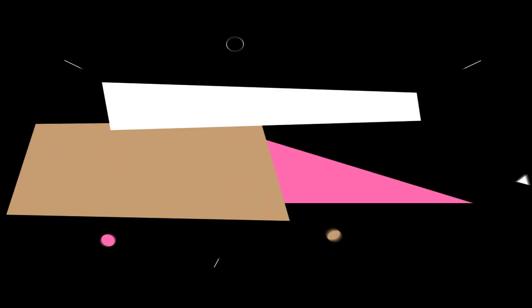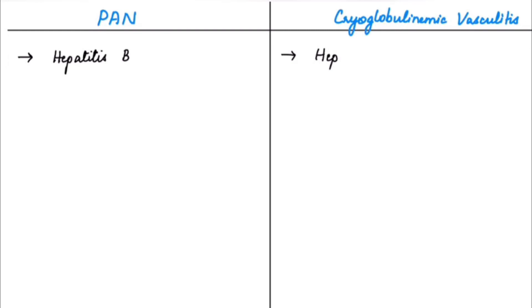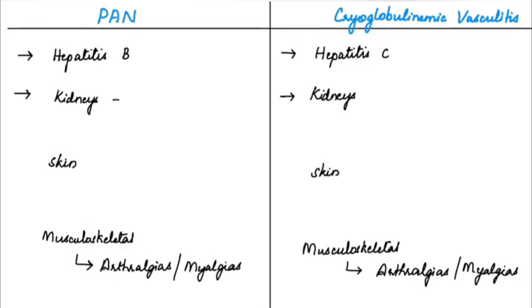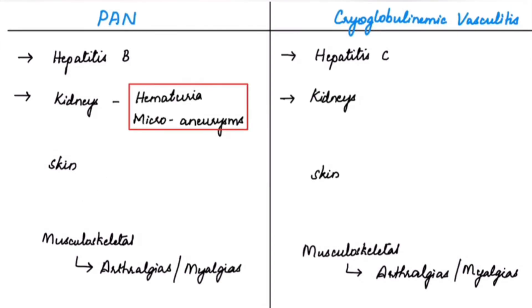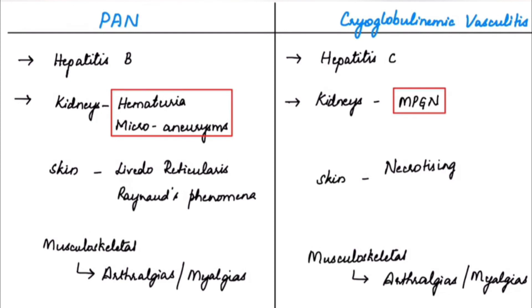Now the differences between polyarteritis nodosa (PAN) and cryoglobulinemic vasculitis: in PAN, hepatitis B antigen acts as the trigger, whereas in cryoglobulinemic vasculitis, hepatitis C antigen is the trigger. Both involve kidney, skin, and musculoskeletal system, with arthralgias and myalgias in both. The key differentiators are renal and skin involvement: renal involvement in PAN presents with hematuria due to microaneurysms, whereas in cryoglobulinemic vasculitis it presents with MPGN. Skin involvement in PAN presents with livedo reticularis or Raynaud's phenomenon, while in cryoglobulinemic vasculitis it presents with necrotizing lesions or purpura especially on the medial side of the legs.